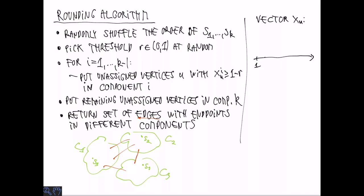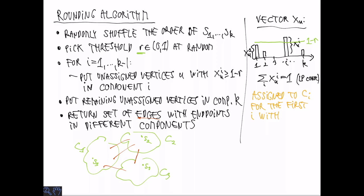Let's look at a vector xU, where the sum of all the entries is 1 and the ith component is xUi. If we draw the threshold 1-r here, we assign u to the index i that is the first one to cross or be above the threshold 1-r, or if no such index exists, it goes into component k.